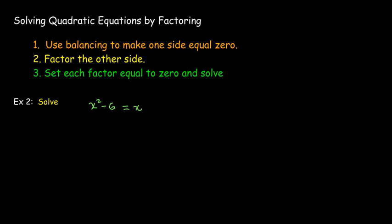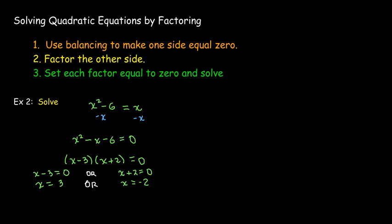So let's look at an example. I have x squared minus 6 equals x. I want this to equal zero. So I'll go ahead and subtract x from each side. Then I get x squared minus x minus 6 equals zero. And I can factor that as x minus 3 times x plus 2. So one of those two factors has to equal zero. Either x minus 3 equals zero or x plus 2 equals zero. And that gives me the two solutions x equals 3 or x equals negative 2.